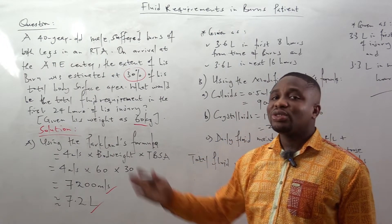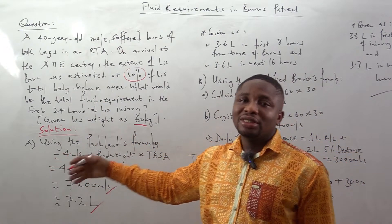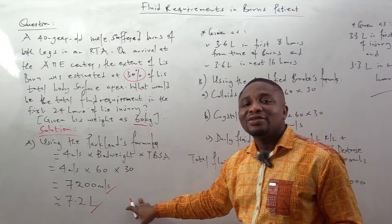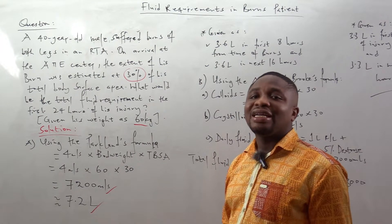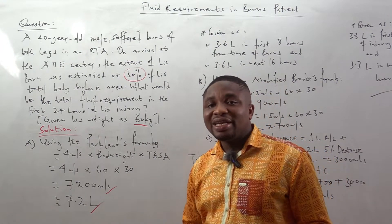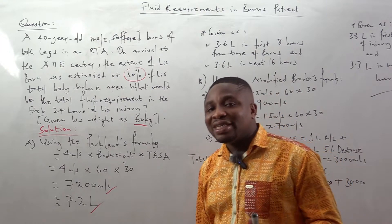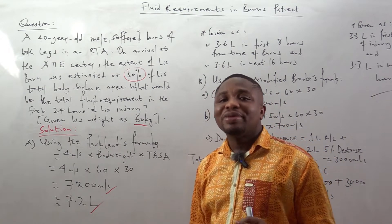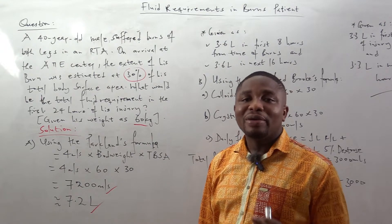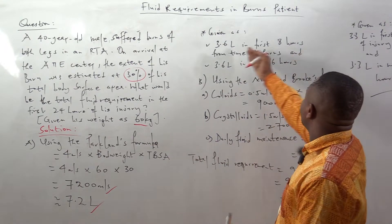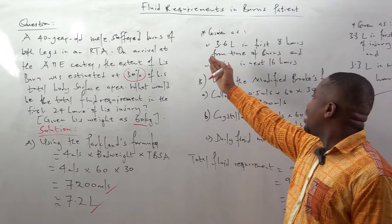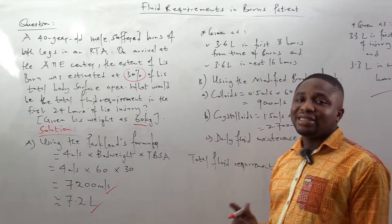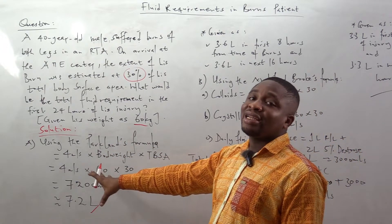How do we give the fluid? 50% should be given in the first eight hours from the time of injury, and the remaining 50% in the next 16 hours. Plasma exudation is most rapid within the first eight hours of a burn injury. So you have 3.6 liters in the first eight hours, and another 3.6 liters in the next 16 hours. That is using the Parkland formula.